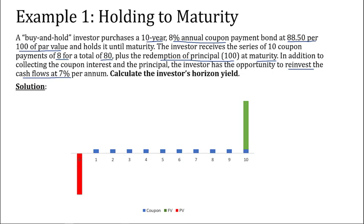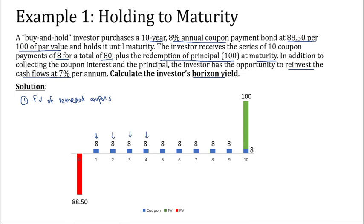We'll plot the cash flow on the timeline. The investor will pay 88.50 to buy the bond and subsequently receive $8 every year for 10 years, and at the end of 10 years the investor will receive the redemption of principal, which is $100. We need to find the horizon yield assuming we can reinvest the coupons at 7% per annum for each of these coupons. We'll split the calculation into three parts. In the first part, we'll look for the future value of the reinvested coupons — in other words, how much are all these $8 worth in 10 years time if reinvested at 7% up to the end of year 10.